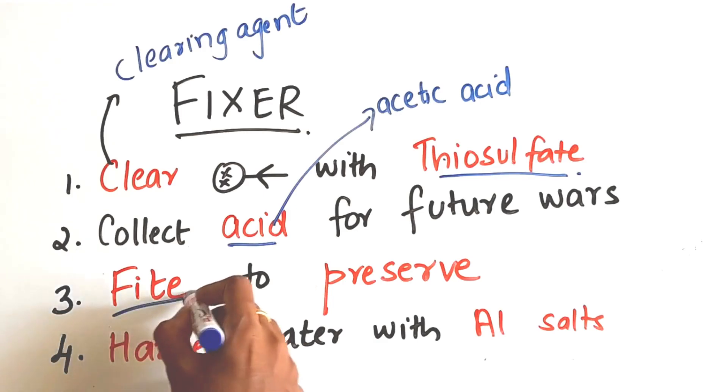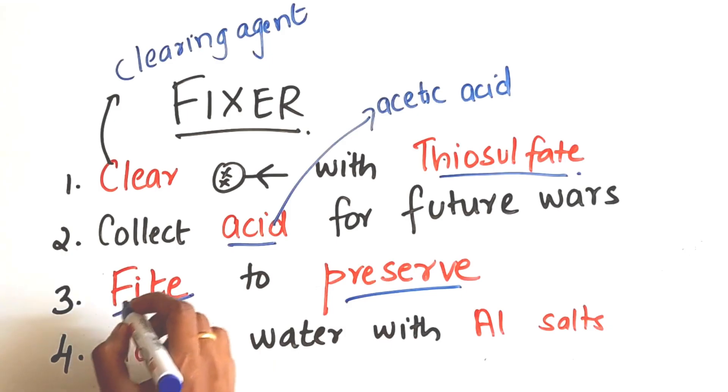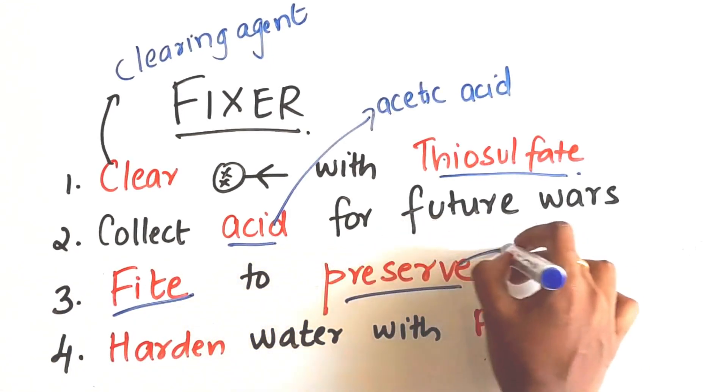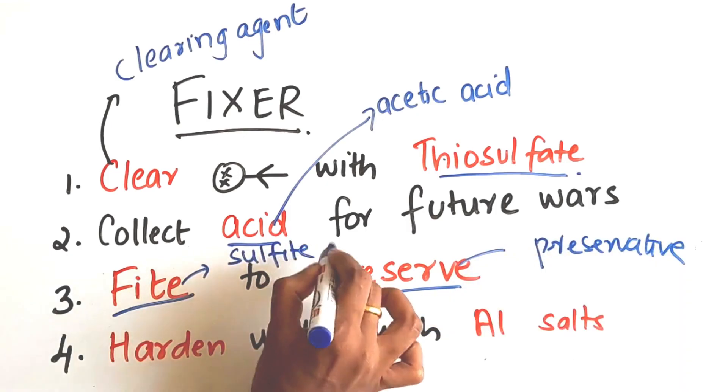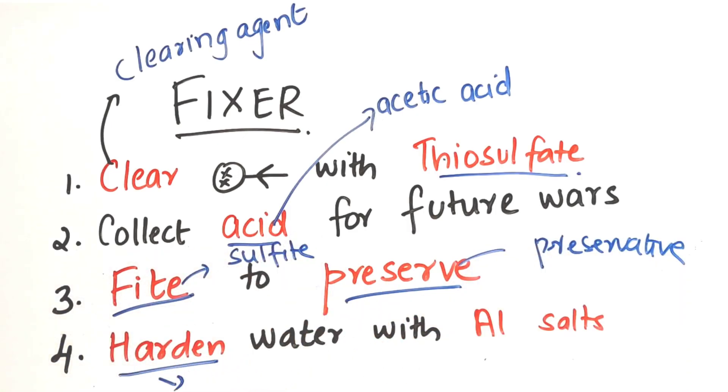Third, we kept on fighting to preserve our secret weapon. Fight will help you remember thiosulfate, which is the preservative here. Lastly, we hardened their water bodies like rivers and lakes with aluminum salts, so they end up drinking hard water.